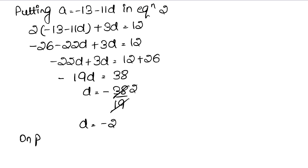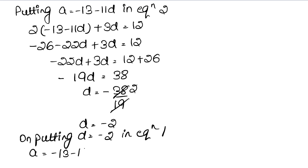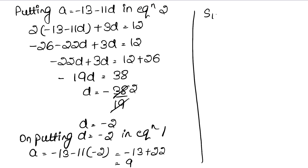D ki value minus 2 aayi. Ab d ki value first equation mein rakh di: a = minus 13 minus 11 into minus 2, jo aata hai minus 13 plus 22 = 9. Toh a = 9 aur d = minus 2 pata chal gaya. Ab hume sum of first 10 terms nikalna hai. Formula: Sn = n/2 into (2a + (n-1)d), jahan n = 10.